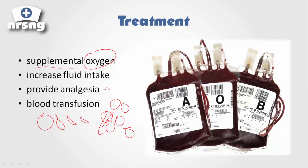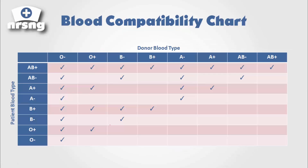When we provide blood to a patient, this is our blood compatibility chart — I'll provide this as a download, but print it out and study it. There are four different blood types: A, B, AB, and O. Then we have our Rh factor, which is going to be either positive or negative.